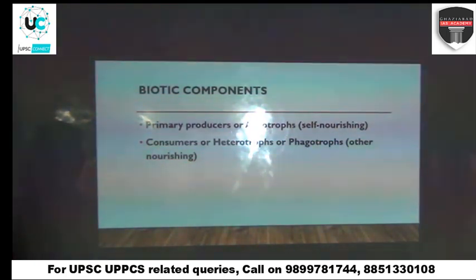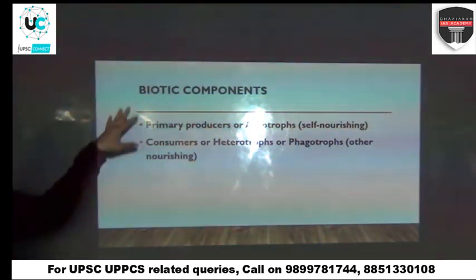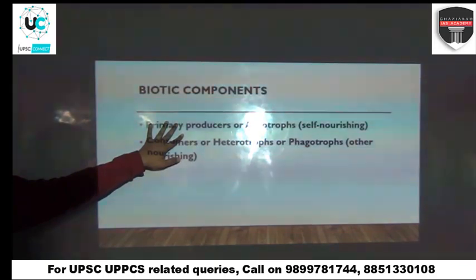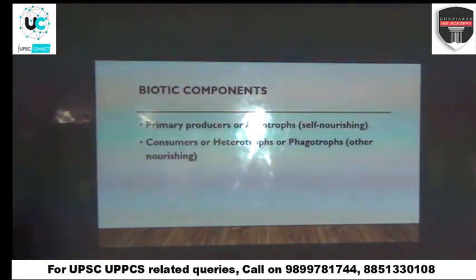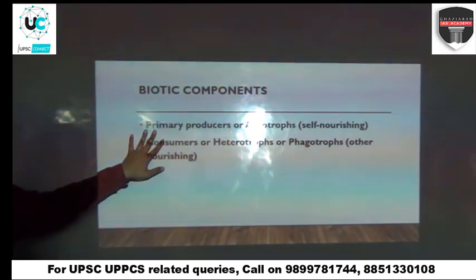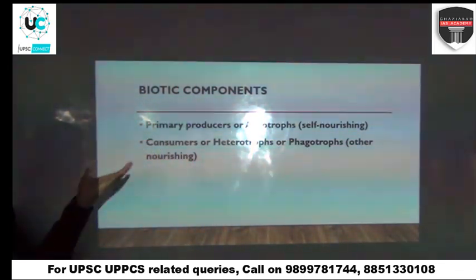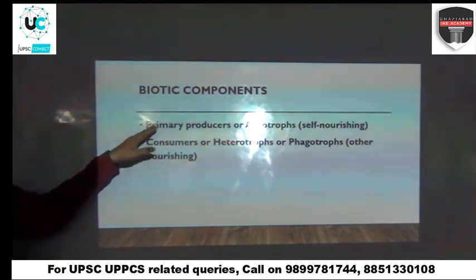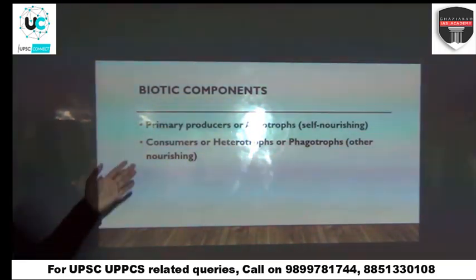Next is your biotic components. Under biotic components, we have two broad categories: autotrophs and heterotrophs. Autotrophs are those components of the environment which produce their own food from abiotic components — and hence they are termed as your primary producers. They are the first producers in your food chain, food web, and energy pyramids. Dependent on autotrophs are your heterotrophs, which include all the consumers.